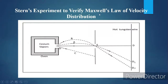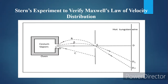This experiment is to verify Maxwell's law of velocity distribution. The experimental setup is very simple. We have a hot oven that can heat the material inside. Inside the oven, cesium is kept. When the oven is heated, it will emit vaporized cesium atoms.